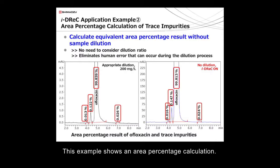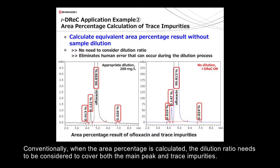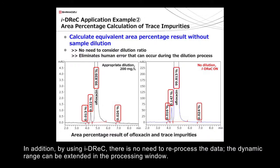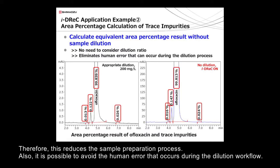This example shows an area percentage calculation. Conventionally, when the area percentage is calculated, the dilution ratio needs to be considered to cover both the main peak and trace impurities. If the iDREC function is applied to the main peak, an appropriate area percentage result can be obtained without the sample dilution process. In addition, by using iDREC, there is no need to reprocess the data. The dynamic range can be extended in the processing window. Therefore, this reduces the sample preparation process. Also, it is possible to avoid the human error that occurs during the dilution workflow.